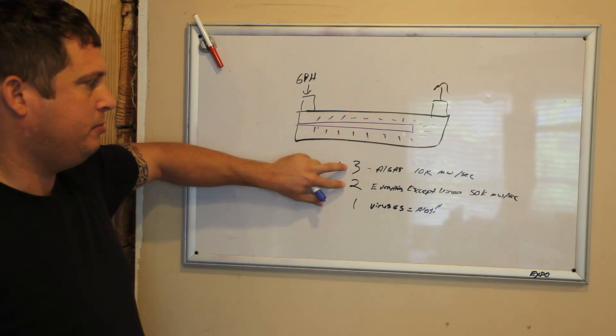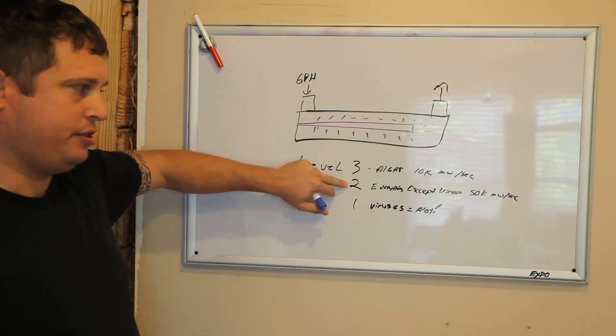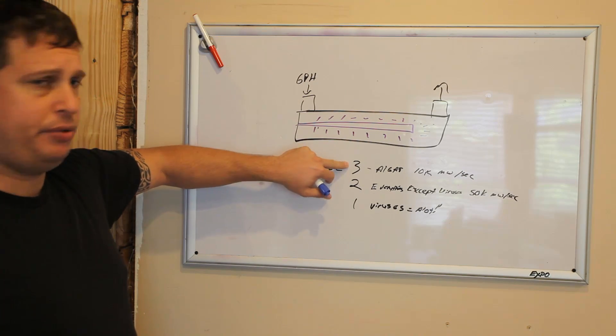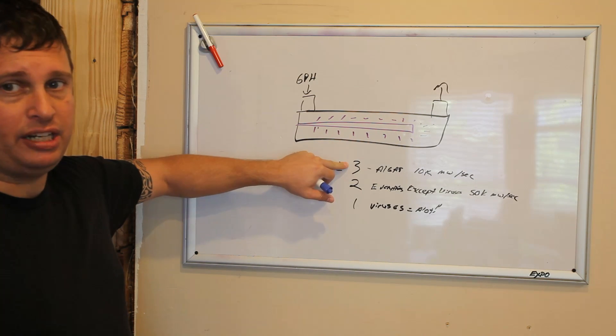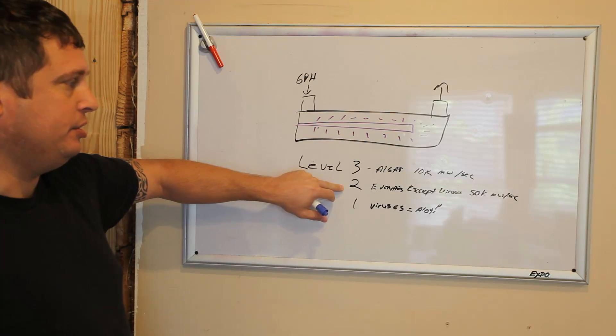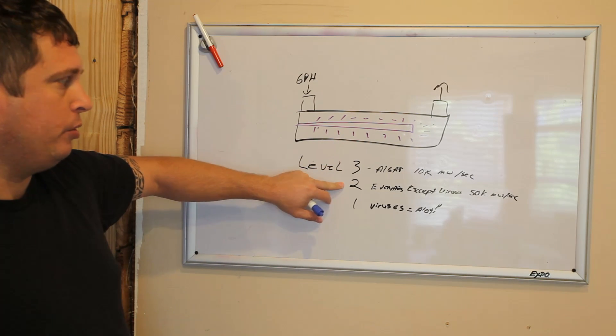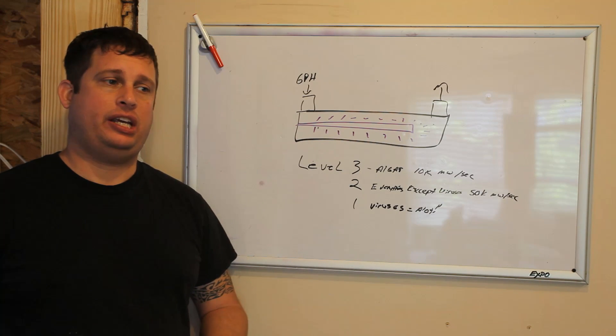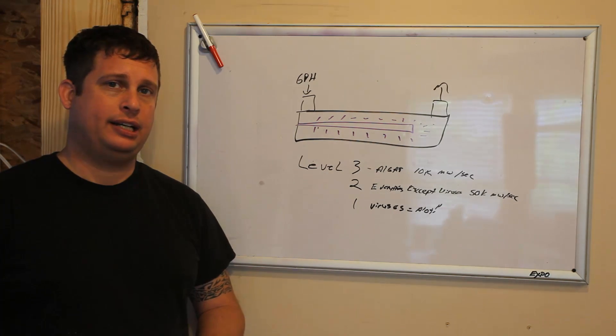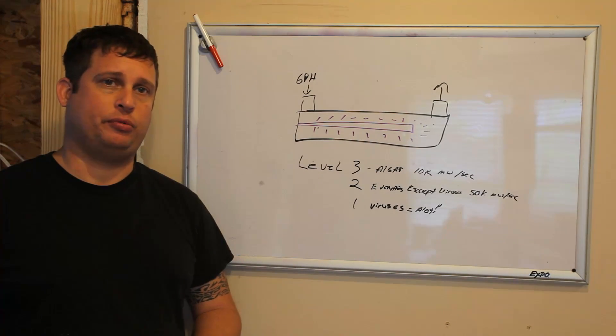Most systems are going to be a level 3 or a level 2. Level 3 would be for like a pond or a freshwater system where you just want to kill the algae. Level 2 would be what we're going to build for a saltwater system where I want to kill algae and free floating life forms.